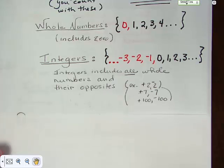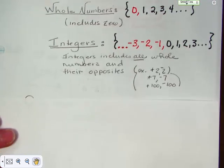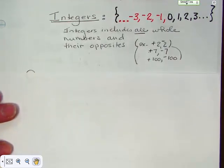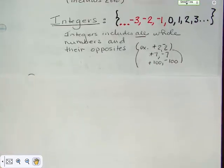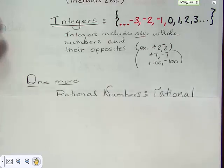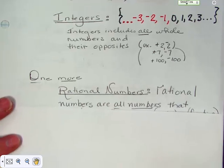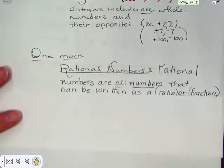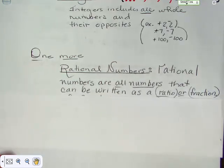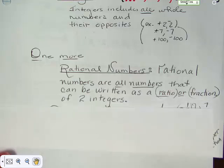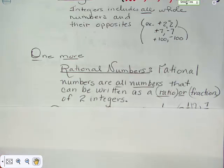Notice you don't see any fractions in the list of integers, unless you were to see two over one or three over one. It is just the whole numbers and their opposites. There's one more set that we haven't talked about, and it's called the rational numbers, which is all of the numbers that can be written as a ratio or a fraction of two integers.